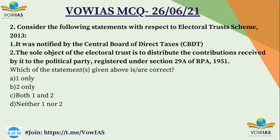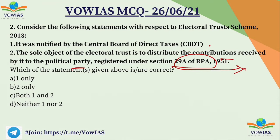The second question — consider the following statements about the Electoral Trust Scheme: Statement 1: It was notified by the Central Board of Direct Taxes. Statement 2: The sole objective is to distribute contributions received to political parties registered under Section 29A of the Representation of People Act 1951. The correct answer is C — both 1 and 2. This Electoral Trust Scheme was introduced in 2013 and was notified by the CBDT.